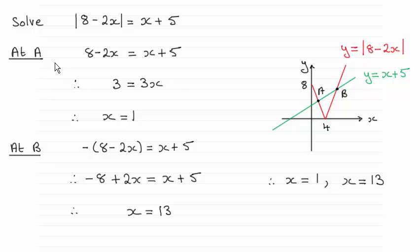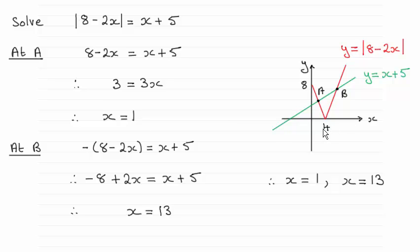At point a, what we're looking at is this part of the graph, which is going to have a negative gradient. This equation then is 8 minus 2x, and it's going to equal x plus 5. So when you equate those two together and rearrange the equation, you can see that x turns out to be 1, which is sensible because it's got to be on the left of the 4 here.